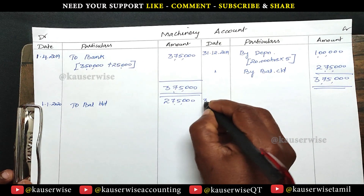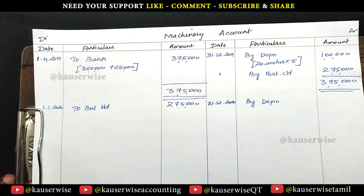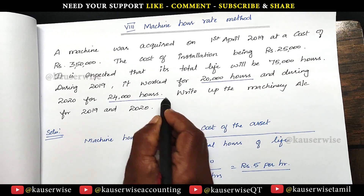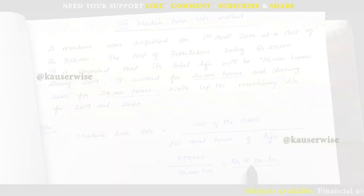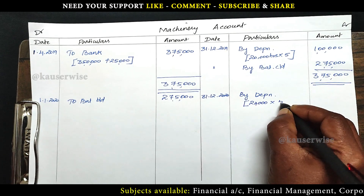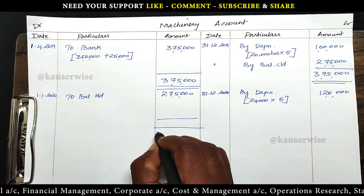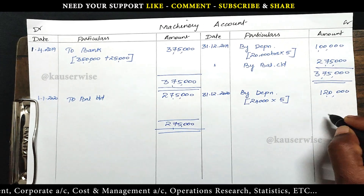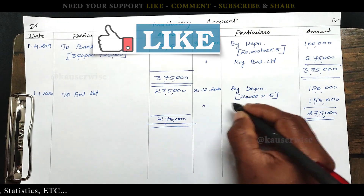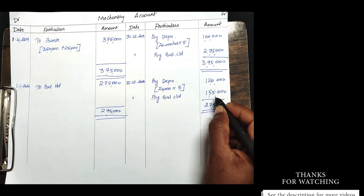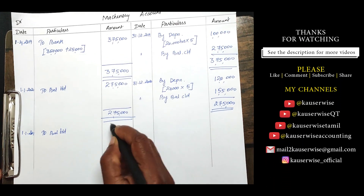In the second year, at the end of the year we calculate depreciation again. During 2020 the machine worked for 24,000 hours. So 24,000 hours multiplied by the Machine Hour Rate of Rs 5 per hour gives depreciation of Rs 1,20,000. That is the depreciation for the second year. The opening balance was Rs 2,75,000, giving a balancing figure — balance carry down — of Rs 1,55,000. This closing balance becomes the opening balance for 2021 as balance brought down of Rs 1,55,000.